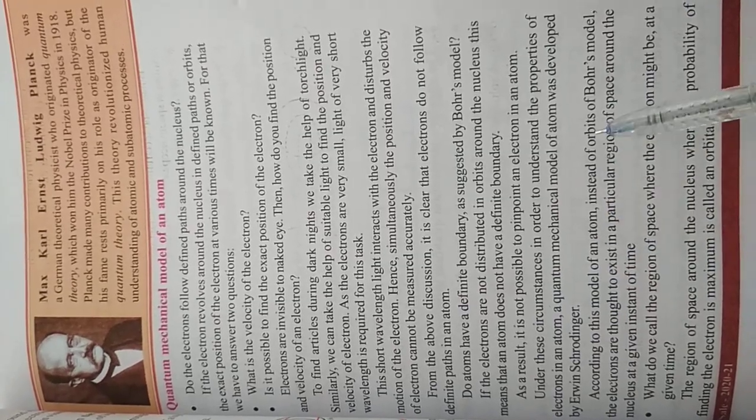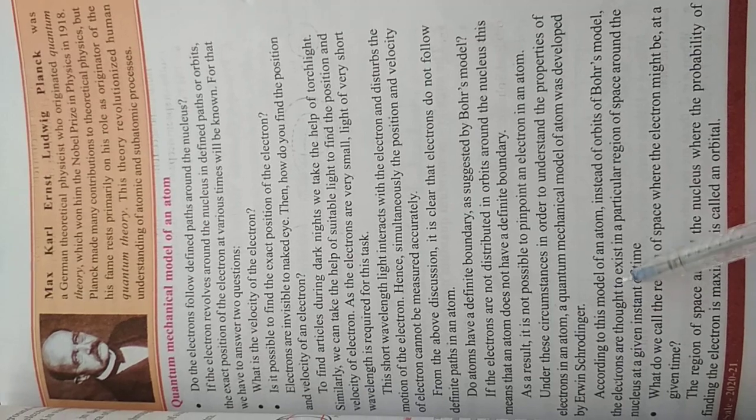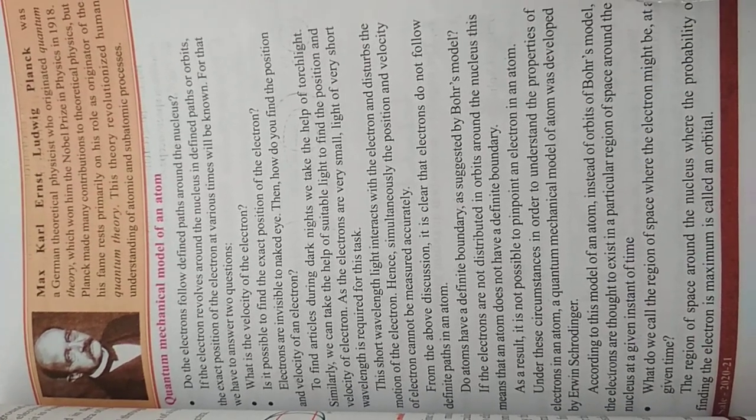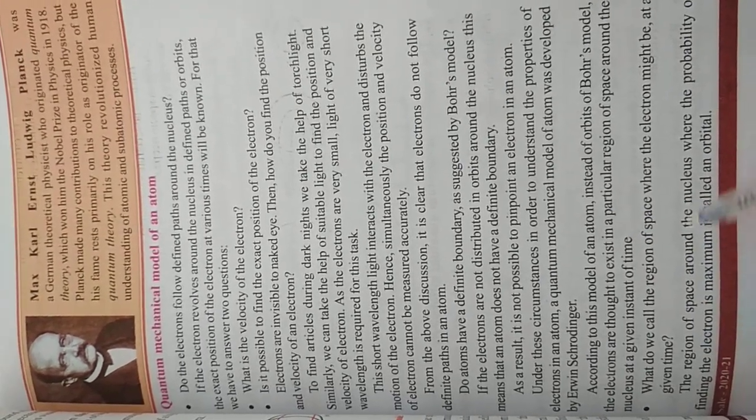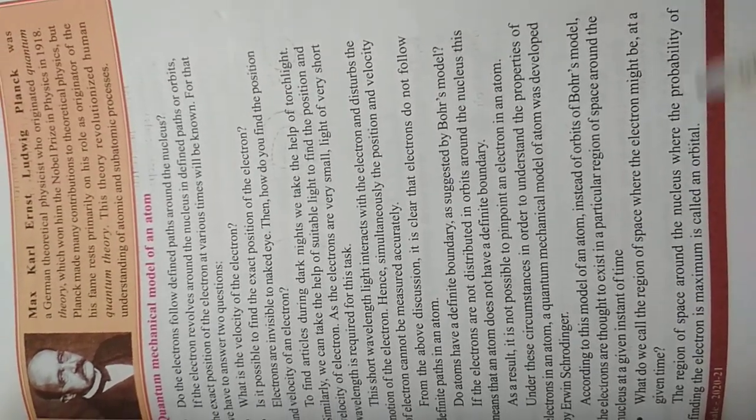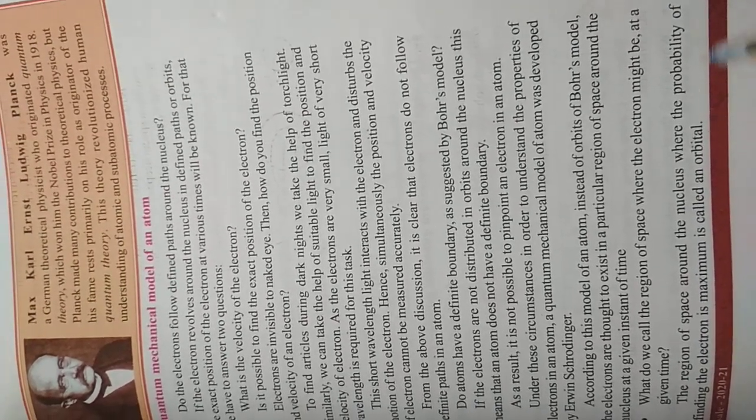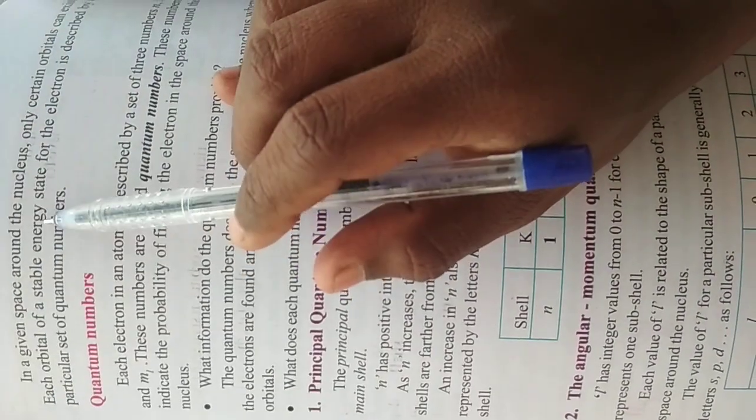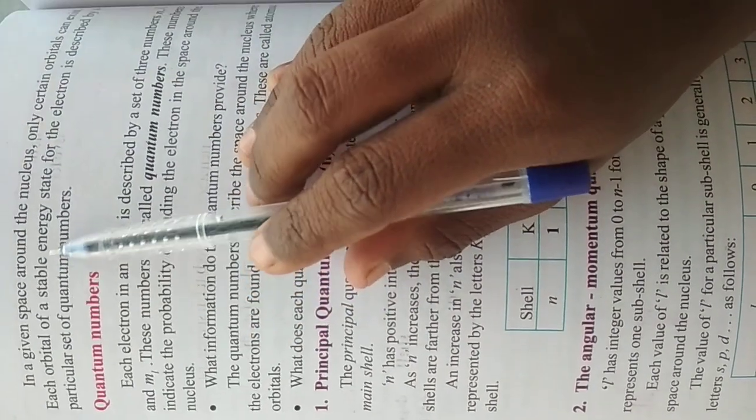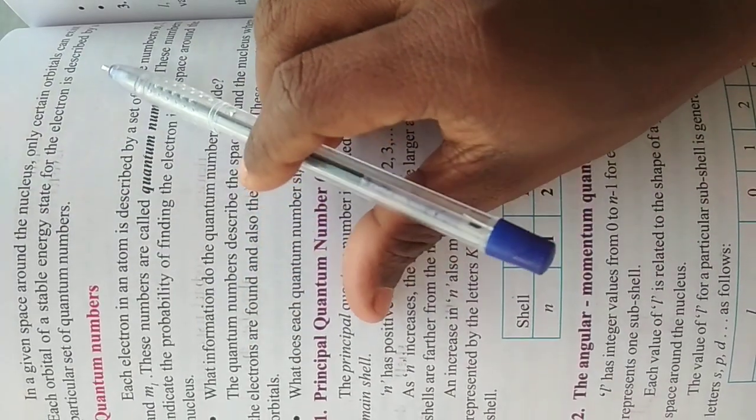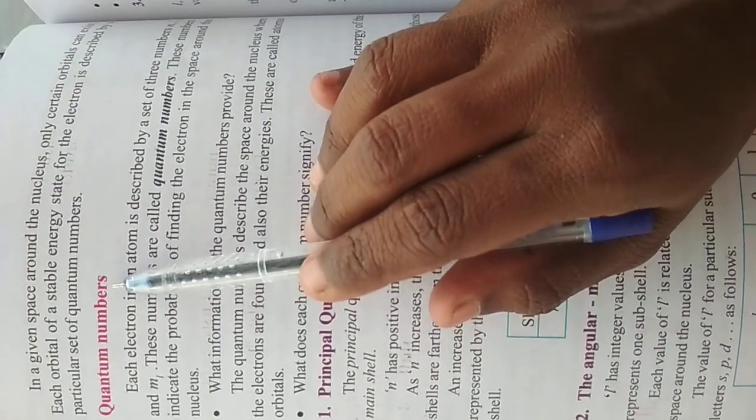According to this model of the atom, instead of orbits of Bohr's model, the electrons are thought to exist in a particular region of space around the nucleus at a given instant of time. The region of space around the nucleus where the probability of finding the electron is maximum is called an orbital. In a given space around the nucleus, only certain orbitals can exist. Each orbital of a stable energy state for an electron is described by a particular set of quantum numbers. Let's study quantum numbers.